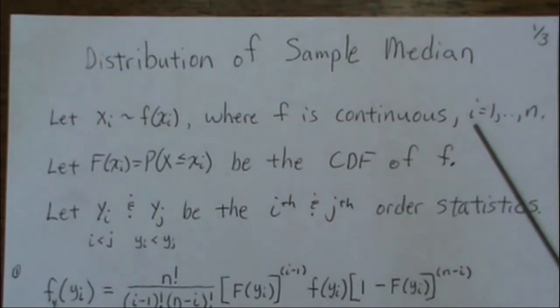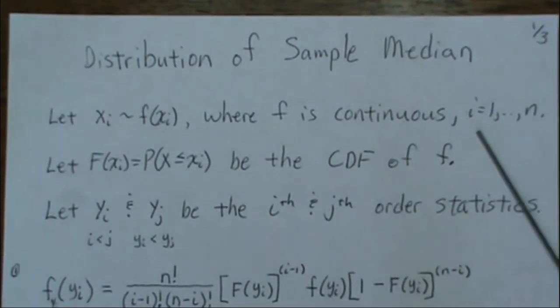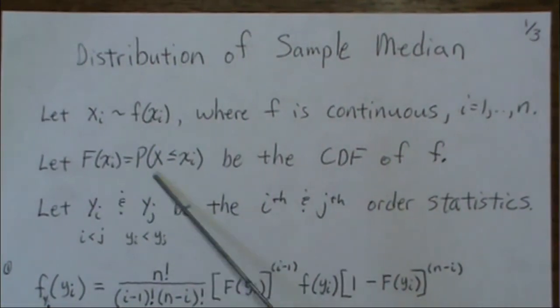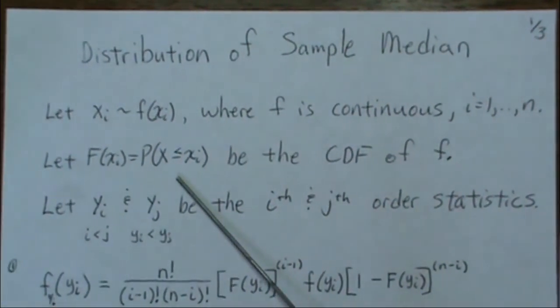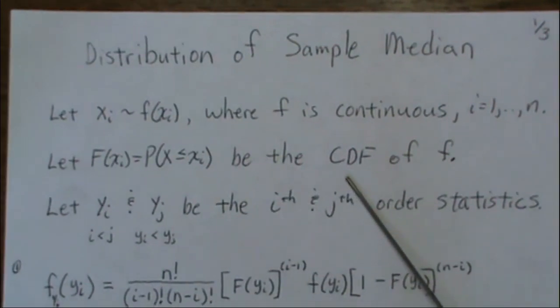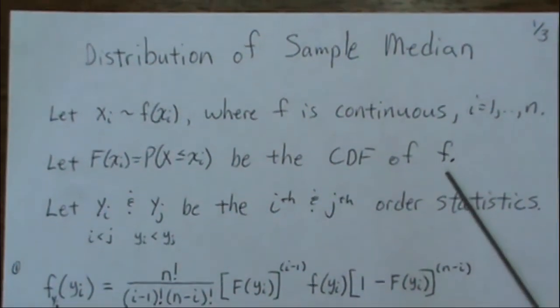And our sample of size n, so our data goes from 1 to n. Capital F of x is going to be the probability of being less than or equal to that value, which is the cumulative distribution function for f.